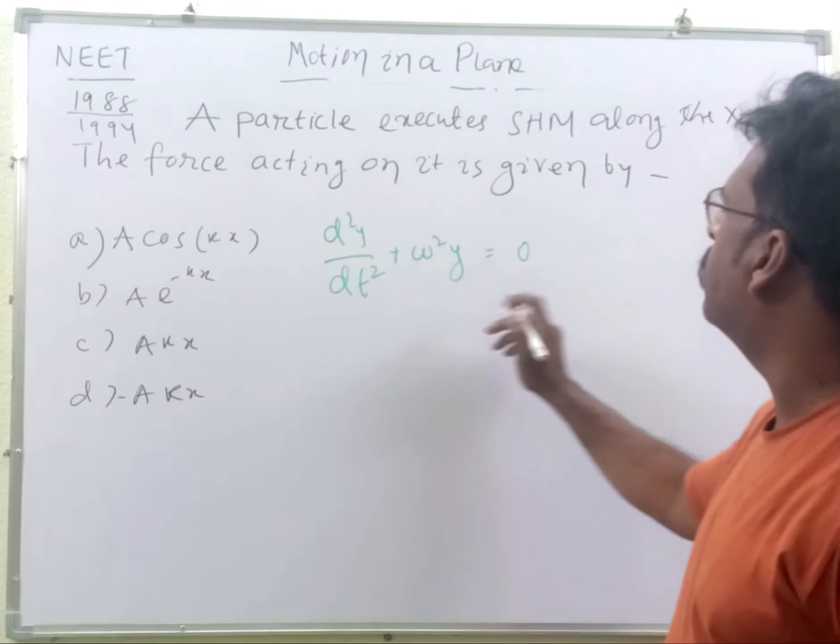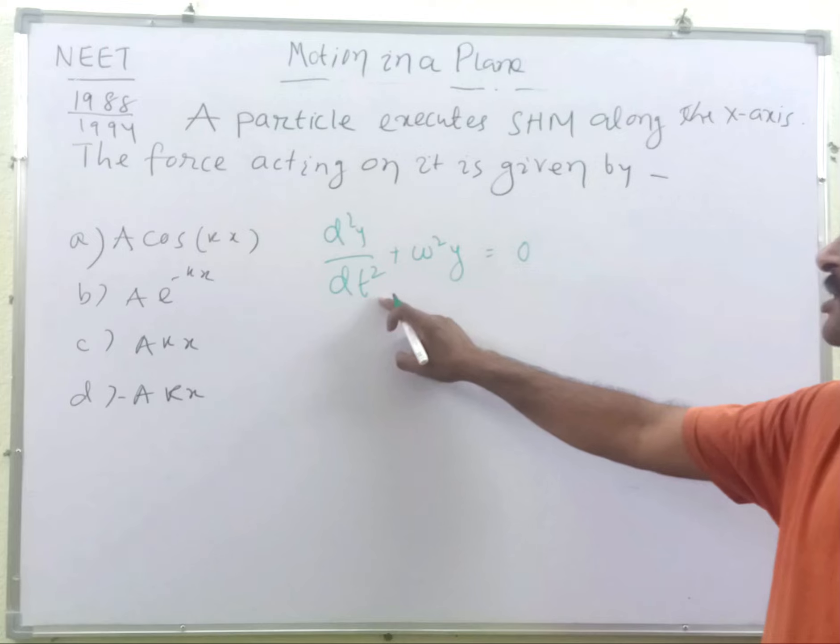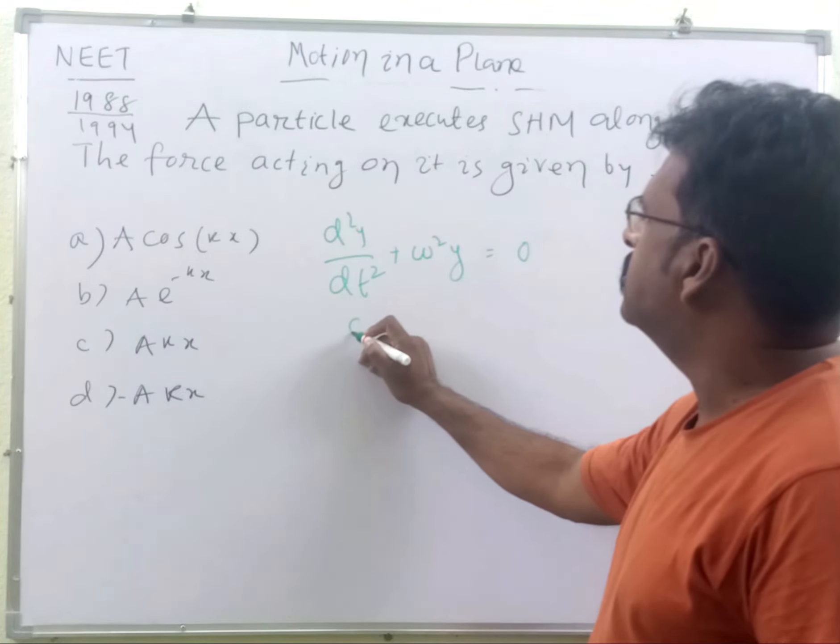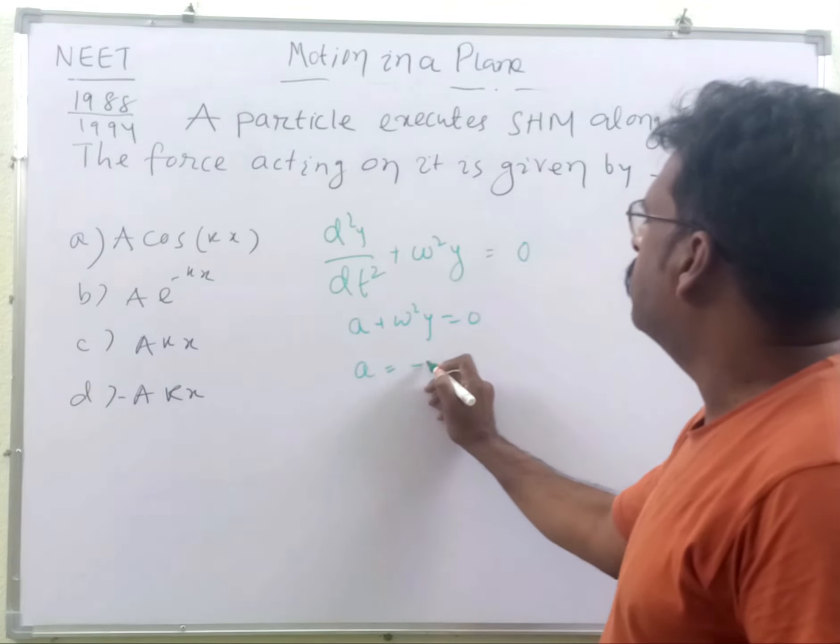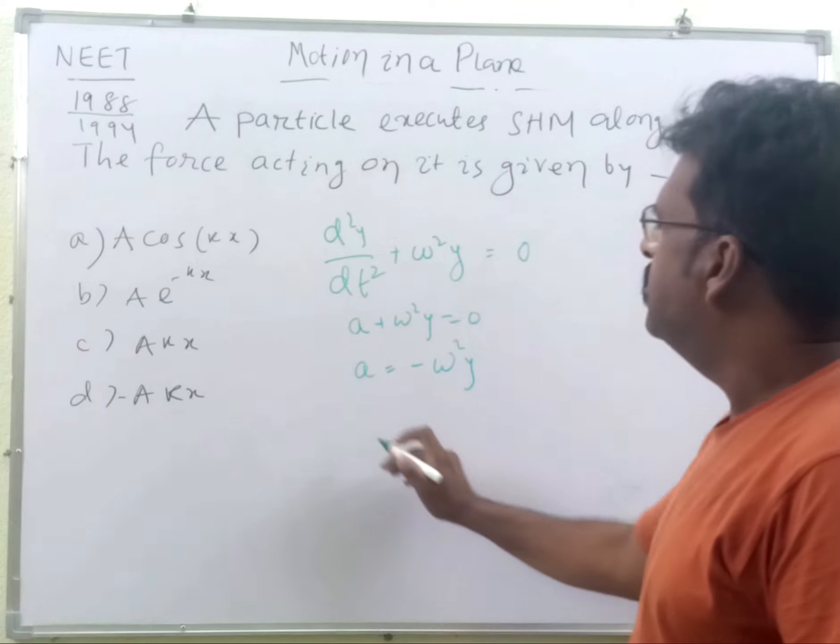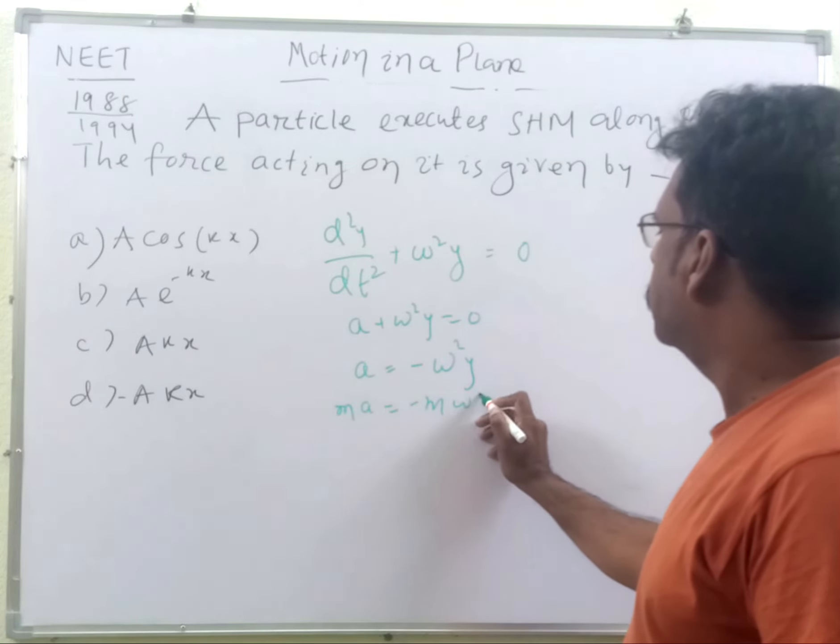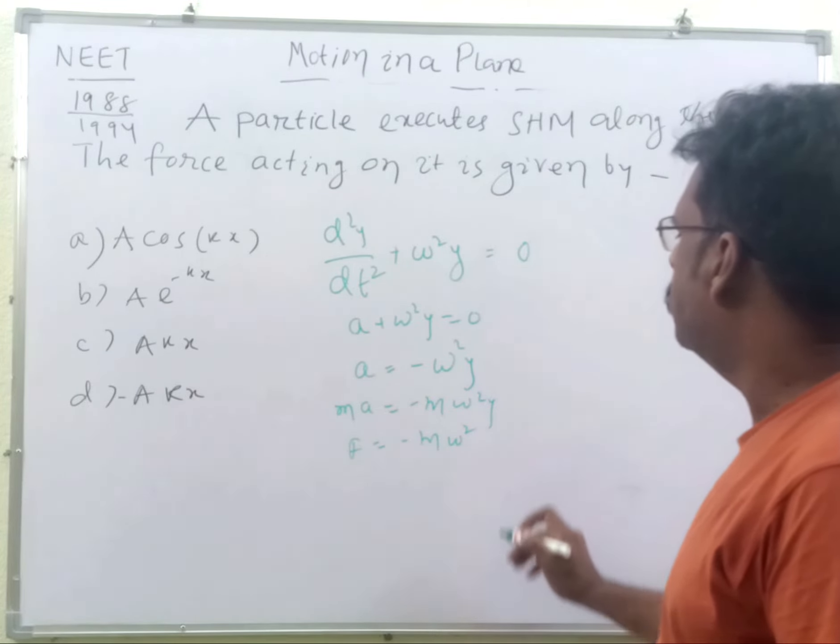Students, where d²y/dt² is the acceleration of the body. So we may write this as a + ω²y = 0, or a = -ω²y. That means ma = -mω²y, or force = -mω²y.